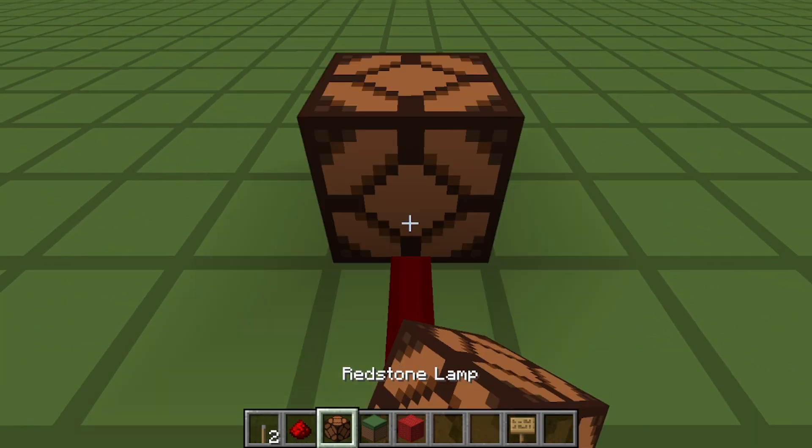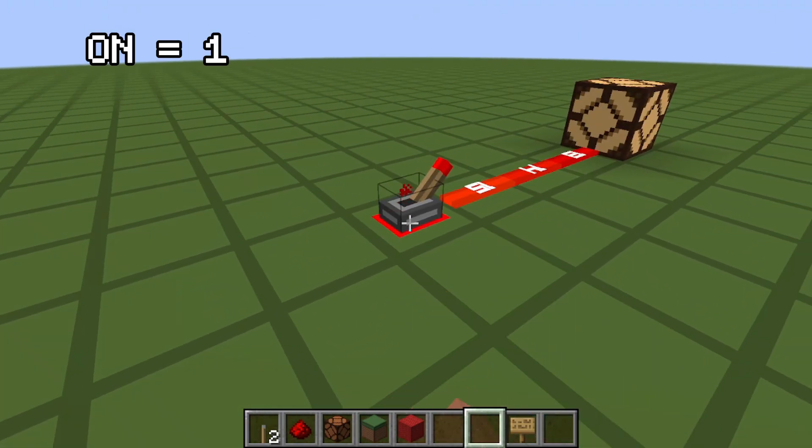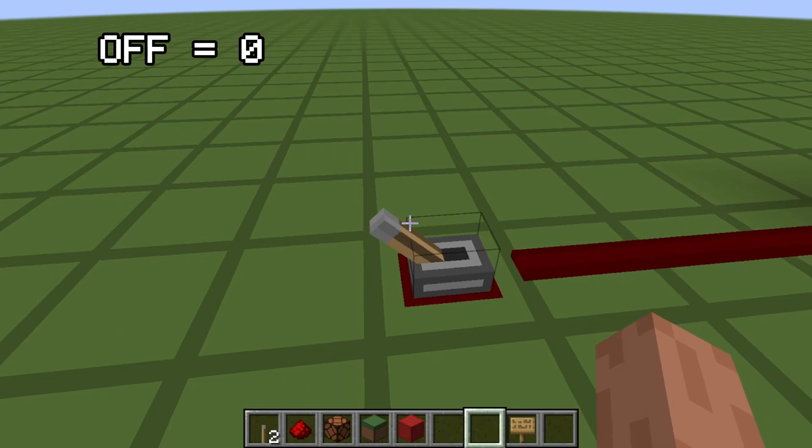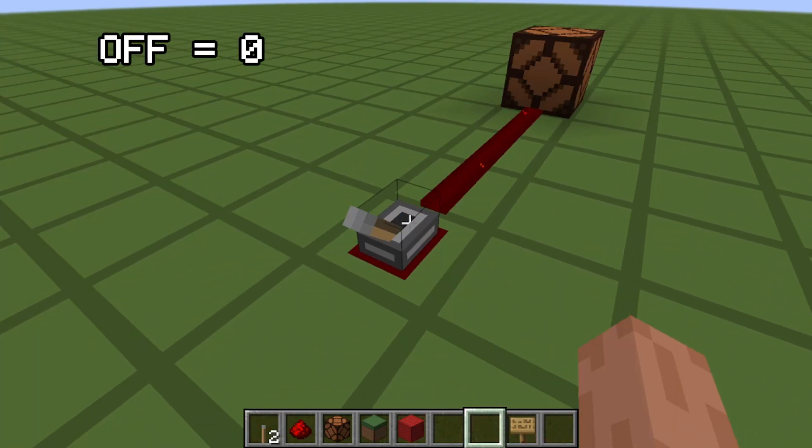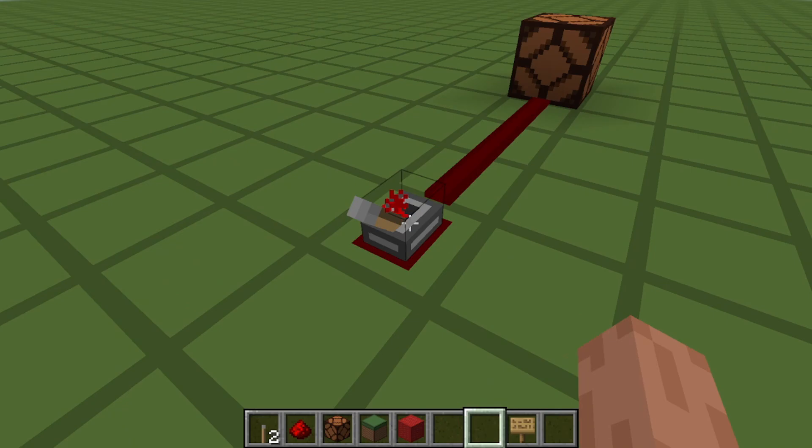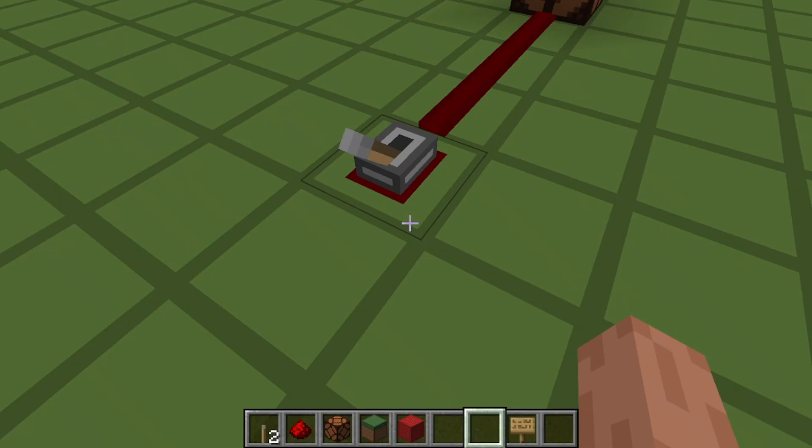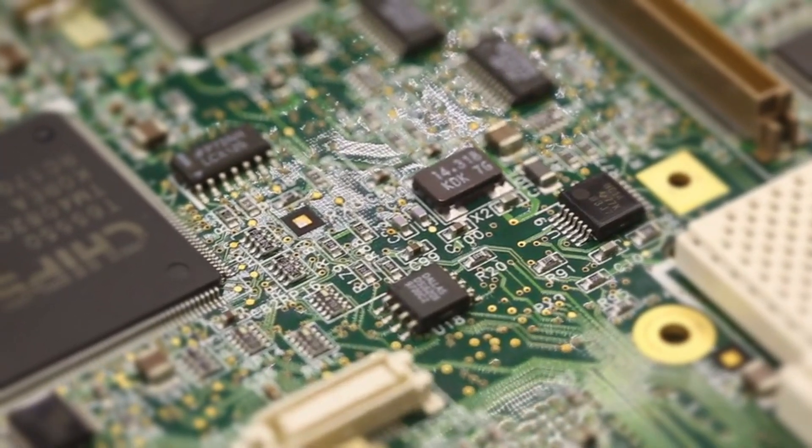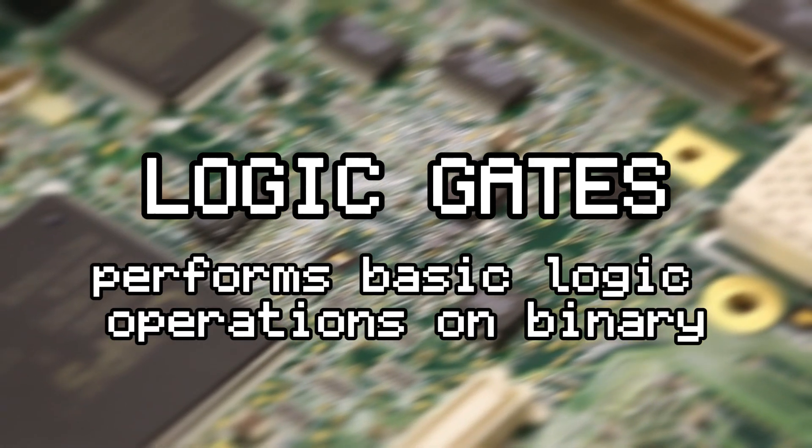Redstone can be thought of as binary. On means one, off means zero. This is the language of computers, and every Redstone build is built from logic. Just like the circuits inside your phone, here is where logic gates come in.